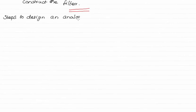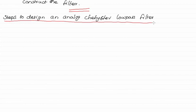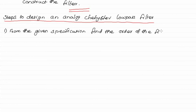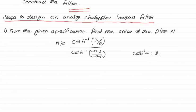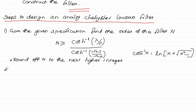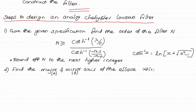Now let us see the steps to design an analog Chebyshev low-pass filter. The first step is to find the order of the filter n from the given specification using the provided equation, then round off the value of n to the next higher integer. The second step is to find the major and minor axes of the ellipse using the given formulas.